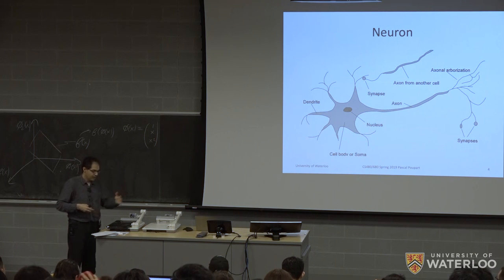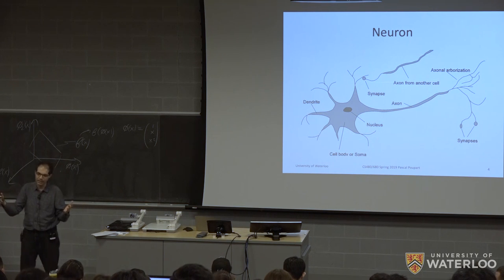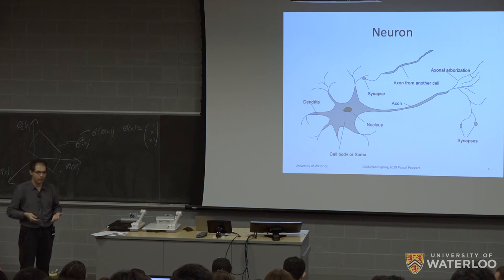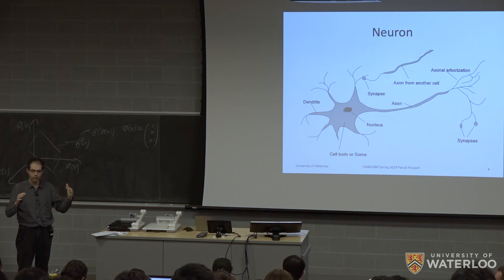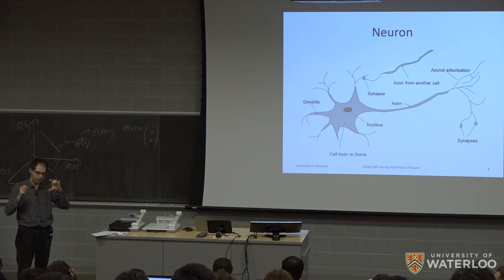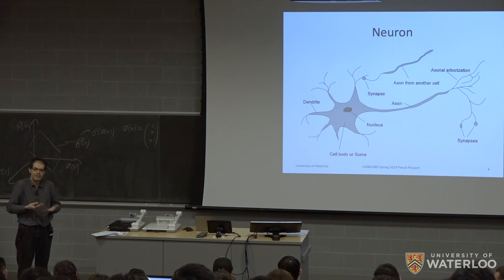The brain is made up of an important class of cells known as neurons. Early on, neural networks were designed so that there are computation units that correspond to, or at least try to mimic, some of the properties that neurons have.